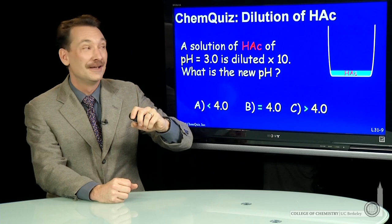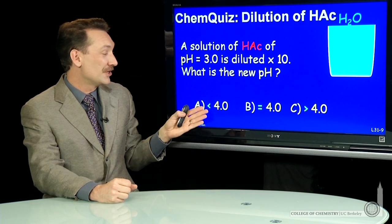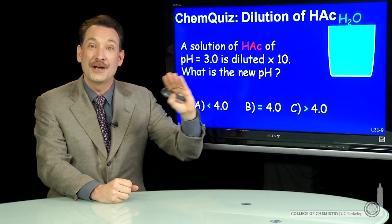So acetic acid, pH 3, dilute with water a factor of 10. Is the new pH less than 4, equal to 4, or greater than 4?